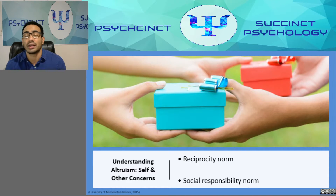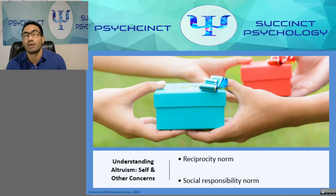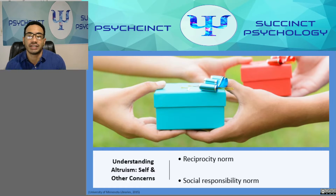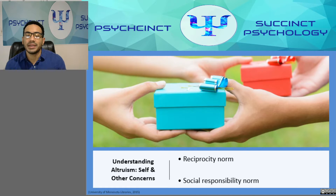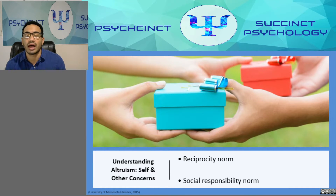One norm we're all aware of and attempt to teach our children is based on equity and exchange — the reciprocity norm. This social norm reminds us that if someone helps us, we should help them in the future, and we should help now with the expectation that they'll help us later if needed. It's found in everyday sayings like 'scratch my back and I'll scratch yours' and in religious teachings like the Golden Rule. The reciprocity norm forms the basis of human cooperation and is found in every culture.